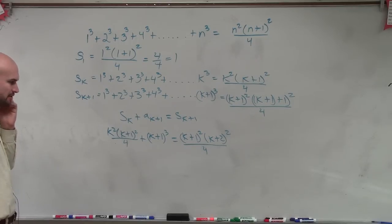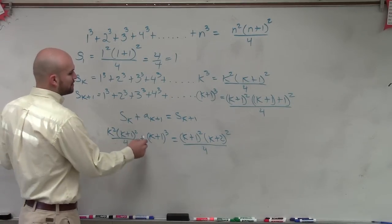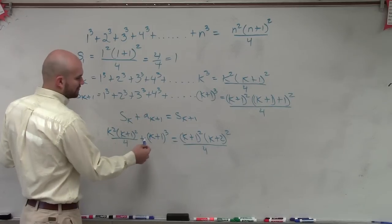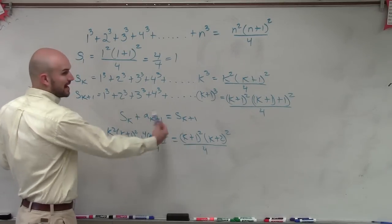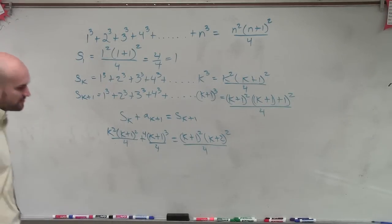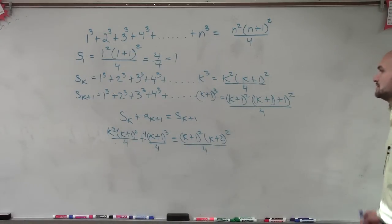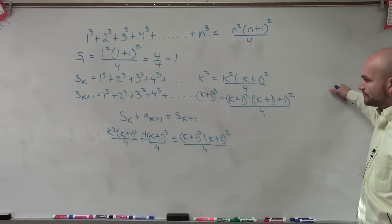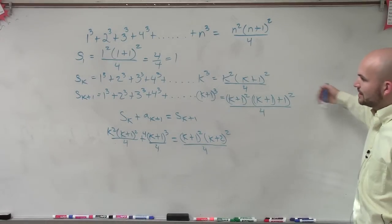Well, before I can distribute the k, one thing I can do is, let's get these to be over the same denominator. So if I multiply this by 4/4, now I can combine them. So let's rewrite that as 4/4.